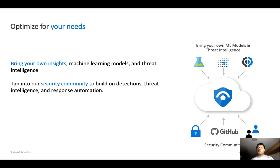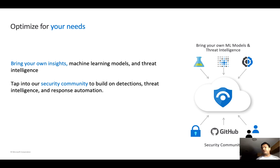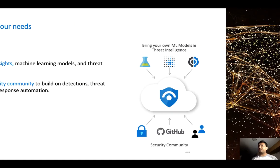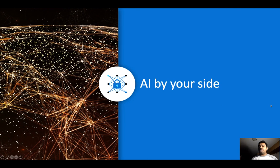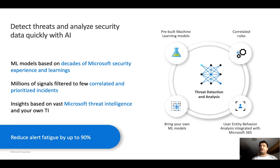If you want to customize detections, you can build your own machine learning models and bring them in. You can use the Graph API to integrate with your existing threat intelligence feeds. If you go to GitHub, you'll find a lot of resources to be creative with.